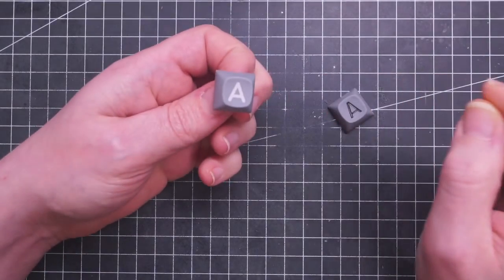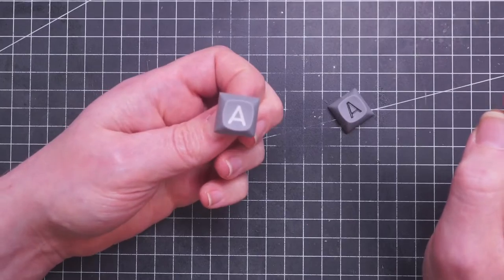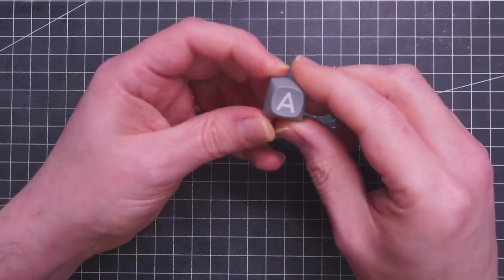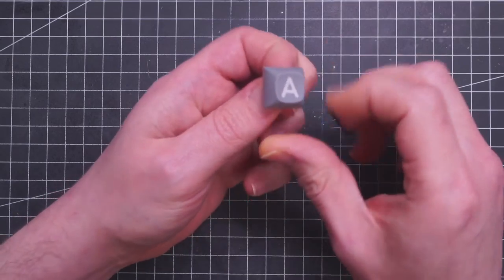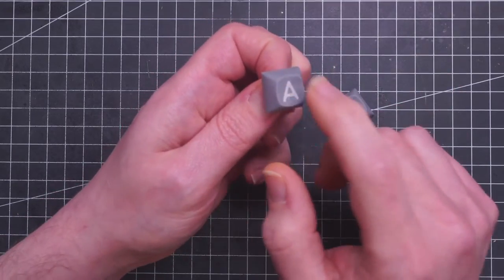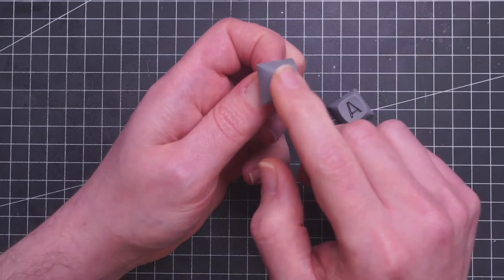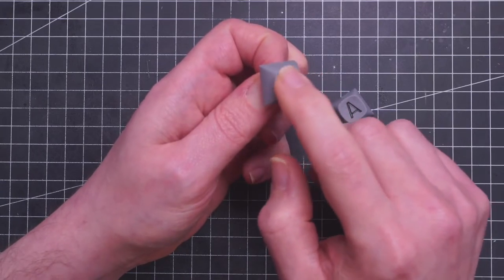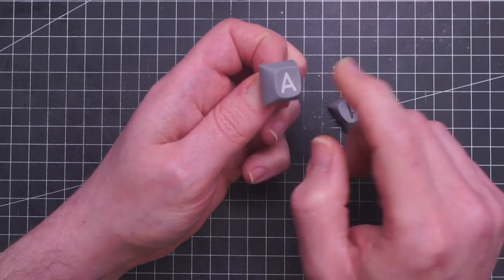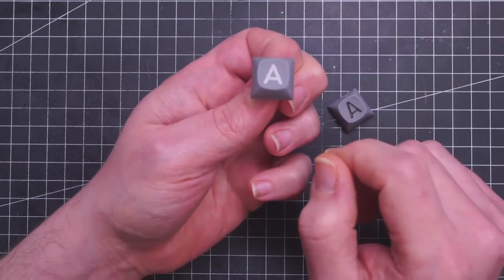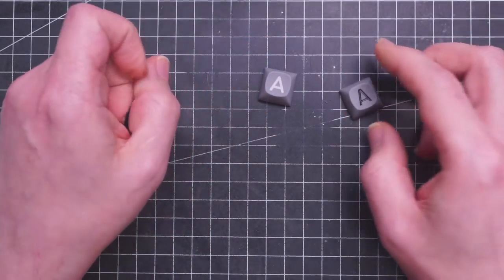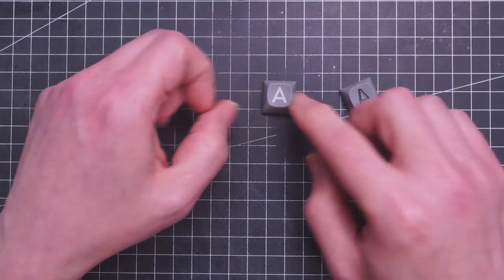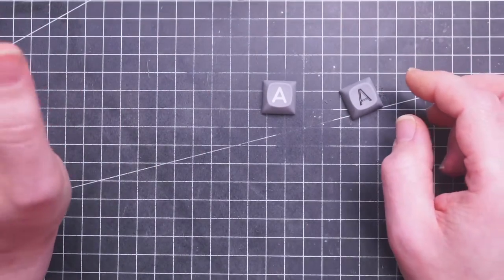So this is 24 hours later. As expected the epoxy putty shrunk a little. I mean it's okay. The legend is not flush with the top surface. It would be okay but I want to try to make it better. So I'm adding another layer of clay.